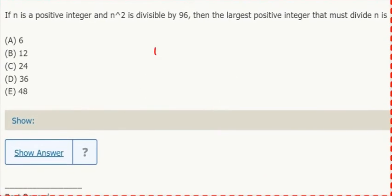n squared needs to be divisible by 96, so I want to say n squared equals 96, which 96 breaks down to 2 to the 5th times 3, which is primes.